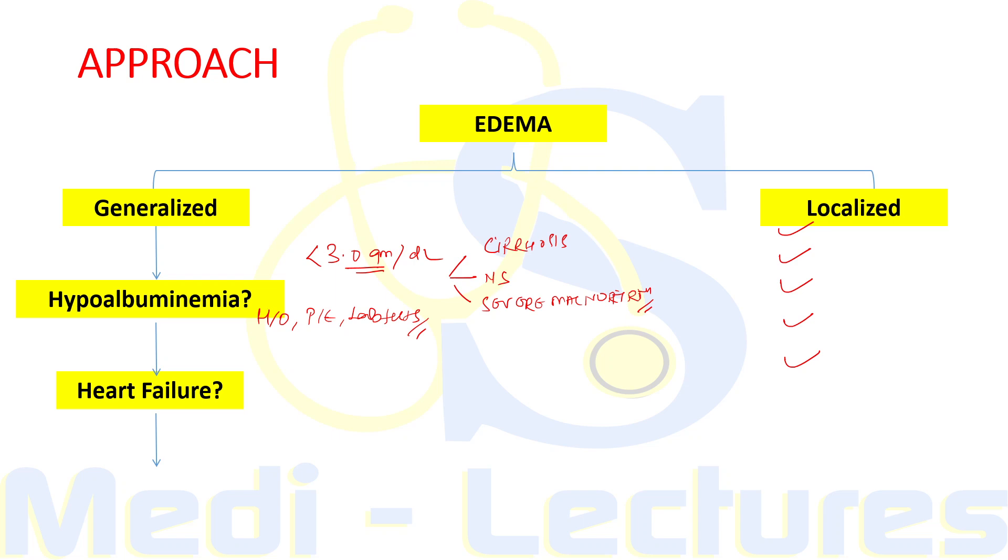Then we will see what is the urine output and the renal function of the patient. If there is significant oliguria or anuria, we will order RFT, ultrasound KUB, and urine analysis to rule out renal failure. So this is in short the approach to a patient with edema.